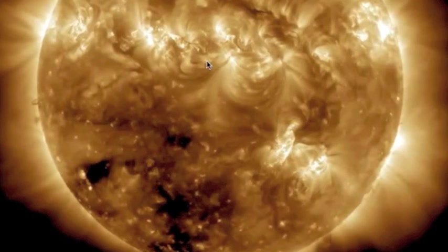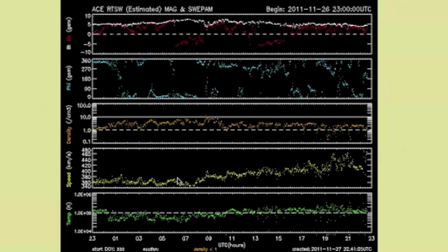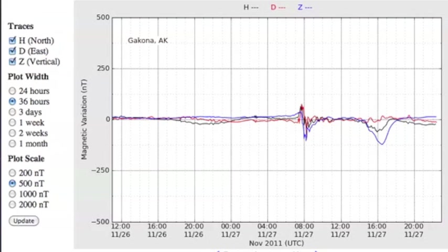Now this coronal mass ejection right here just hit us this morning, 7 or 8 o'clock universal time. You can see the solar wind speed has been increasing. Not much going on with the density, but you can see it hit right there.